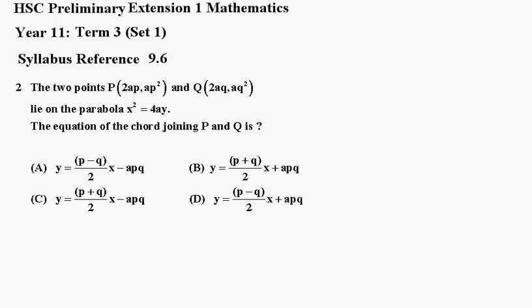First of all, we'll find the gradient joining P and Q using the gradient formula. So we'll say that M equals the difference of the y values, which is ap² minus aq², over the difference of the x values, 2ap minus 2aq.